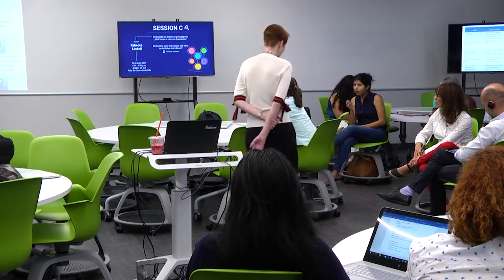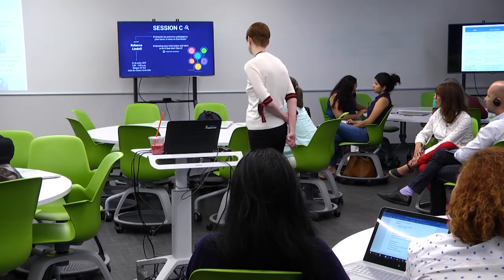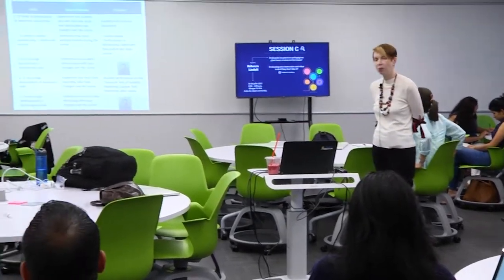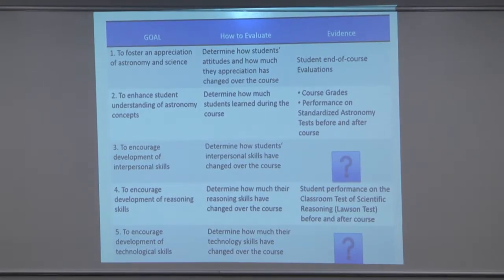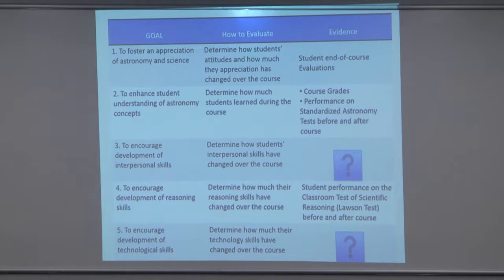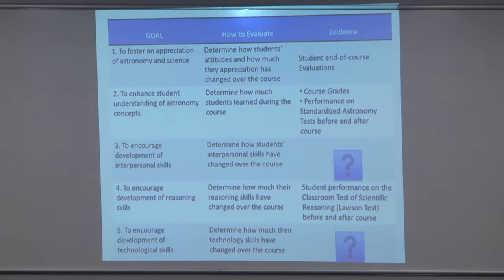What I started doing was breaking this down into a table — an evaluation table. You start with a goal, then talk about how to evaluate it and what evidence you're going to collect. For example, I wanted to foster an appreciation of astronomy and science. To evaluate this, I determined how students' attitudes had changed over the course, using modified end-of-semester teaching evaluations to see how different aspects of the course contributed to their learning. But how do you measure an attitude using something like that?